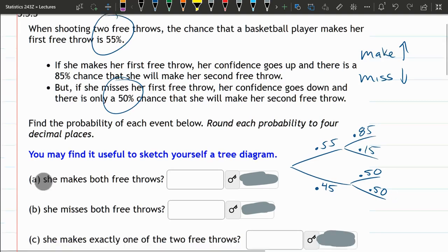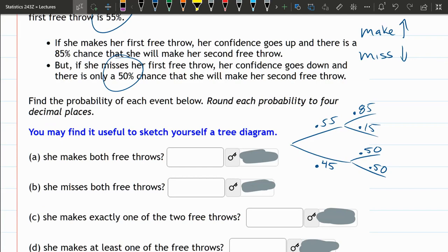Okay, so we have this chart. Now, she makes both free throws. Let's use green here. That's both branches going up. So we have .55 times .85. You multiply those, and that's the number here. That's making both.